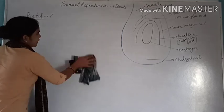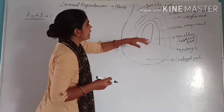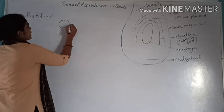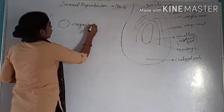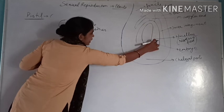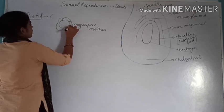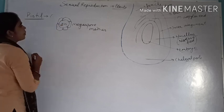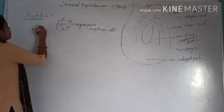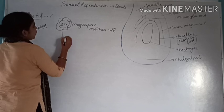Before the formation of the mature ovule, when the ovule is immature, the MMC — that is the megaspore mother cell — is located at the micropylar end and is surrounded by the nucellus cells. The megaspore mother cell is diploid in nature, just like the PMC. This MMC cell undergoes meiosis division.